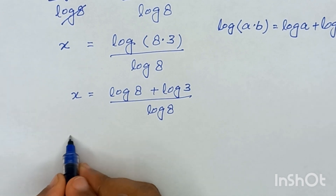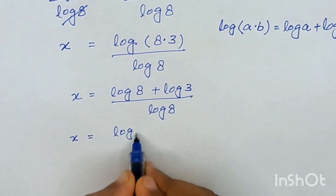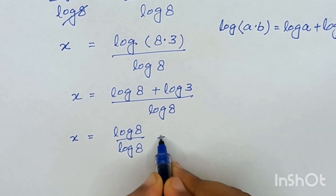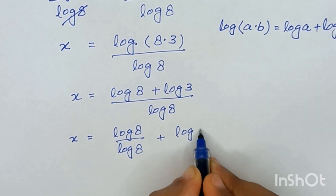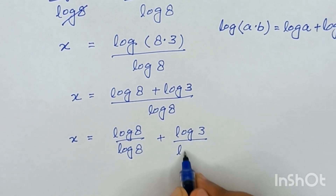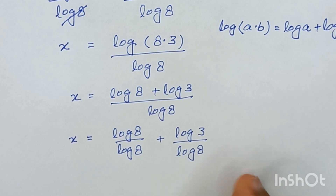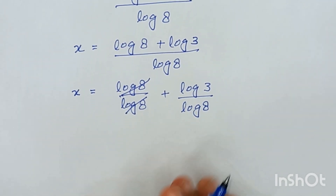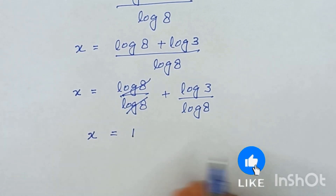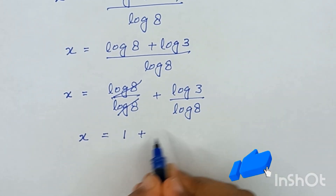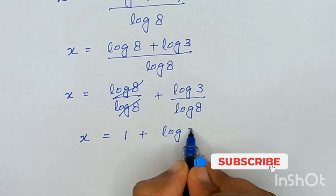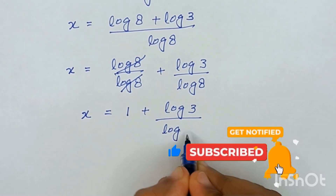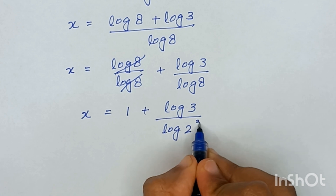We can write it as x is equal to log of 8 divided by log of 8, plus log of 3 divided by log of 8. This log of 8 and log of 8 will cancel out, and it will be x is equal to 1 plus log of 3 divided by log of 8, where log of 8 is the same as 2 raised to the power 3.